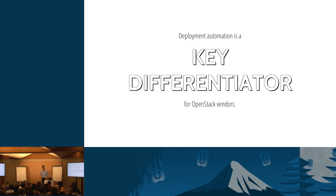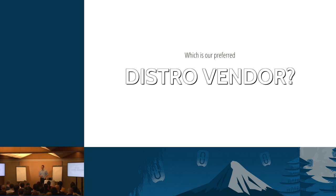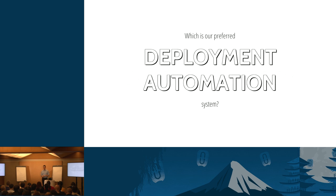Very few OpenStack vendors ship a deployment automation scheme identical to the next vendor's. That means you as an OpenStack user and administrator must ask yourself two questions specific to your use case. First: which is your preferred distro vendor? Do you already have a working relationship with a specific distro vendor you'd like to maintain? If so, that is going to influence your choice of OpenStack product and deployment automation.